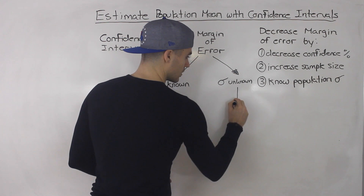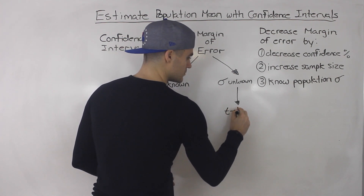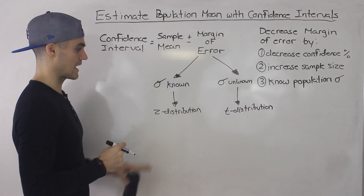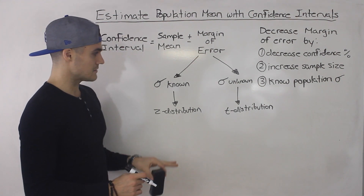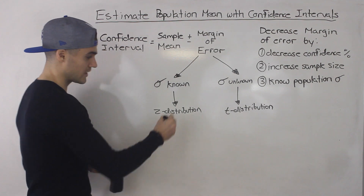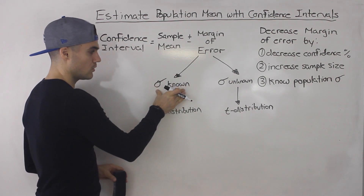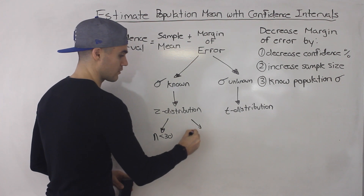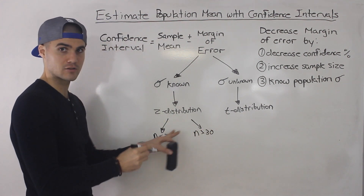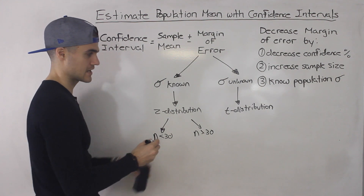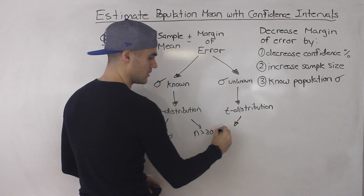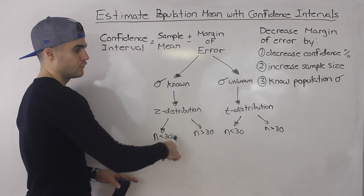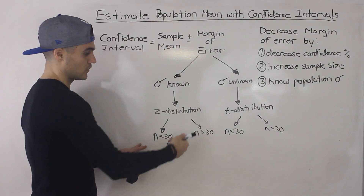If the population standard deviation is unknown, we use something called the T distribution, which you probably haven't heard of yet. I'll explain what it is and how it compares to the Z distribution. Now some courses break this down further — they'll ask whether the population standard deviation is known and whether the sample size is less than 30 or greater than 30, adding another parameter to determine which distribution to use.